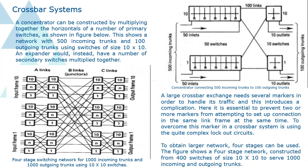A concentrator can be constructed by multiplying together the horizontals of a number of primary switches, as shown in figure below. This shows a network with 500 incoming trunks and 100 outgoing trunks using switches of size 10 by 10. An expander would, instead, have a number of secondary switches multiplied together.